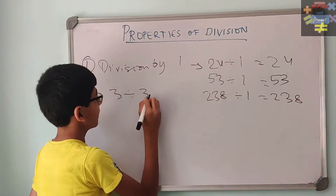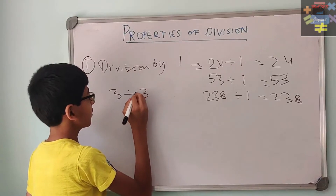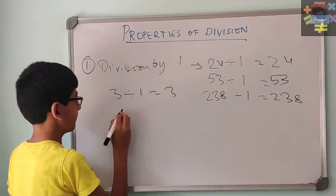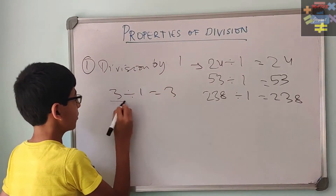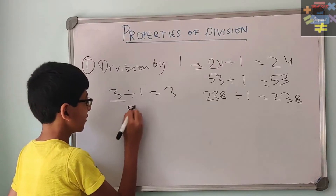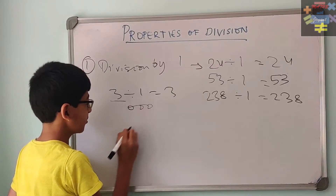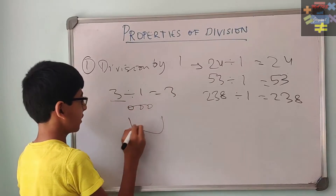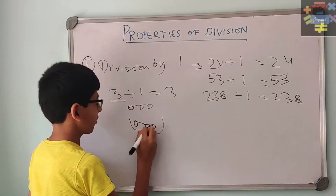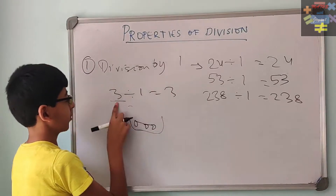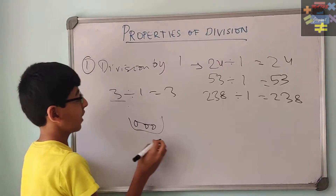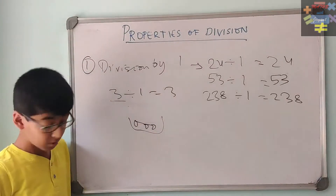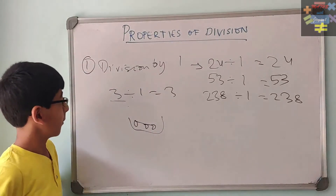Suppose we do 3 divided by 1, which equals 3. We have a total of 3 items and we just have 1 group. So these 3 items are going to go into that one group, and each group will have 3 itself. This works for any number.